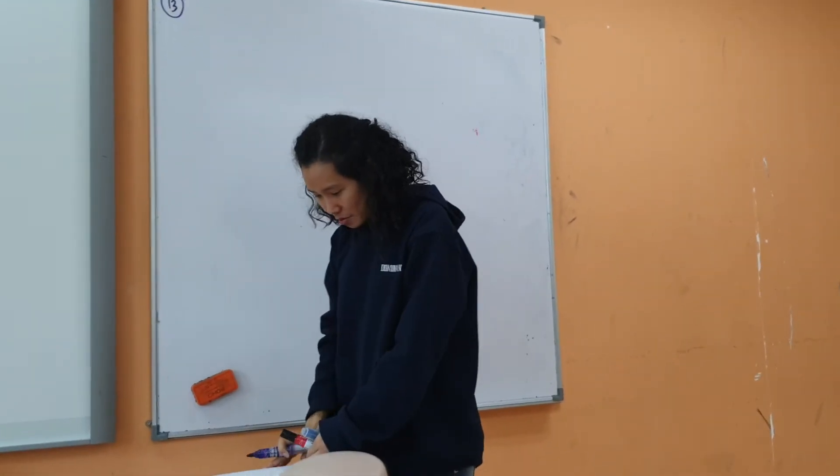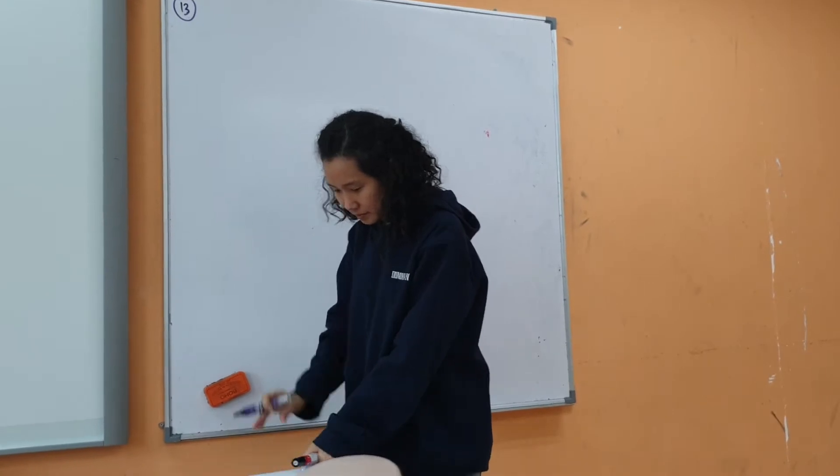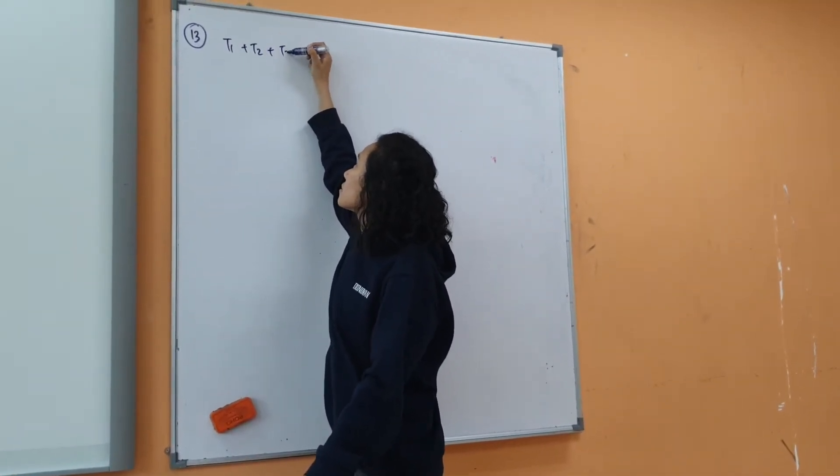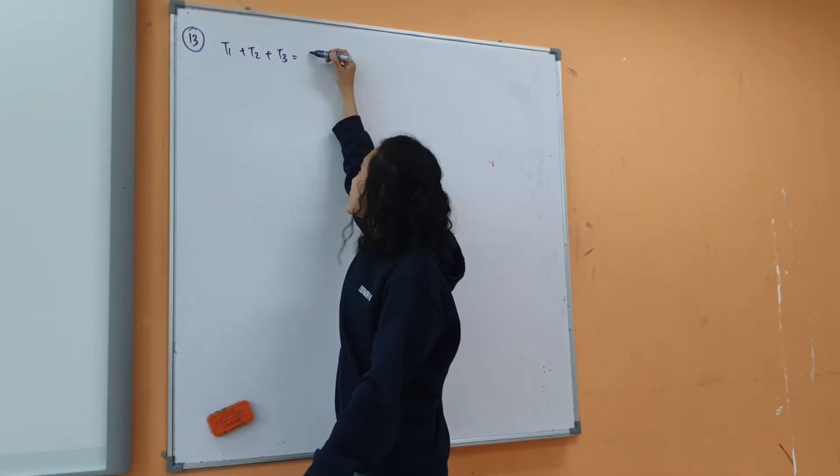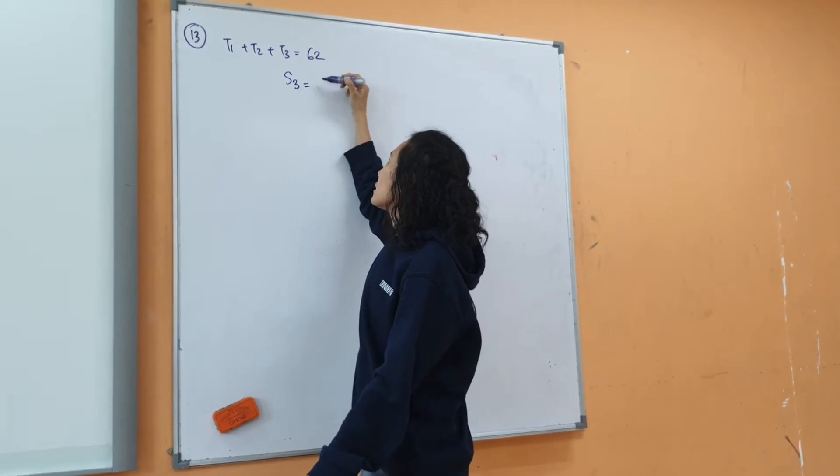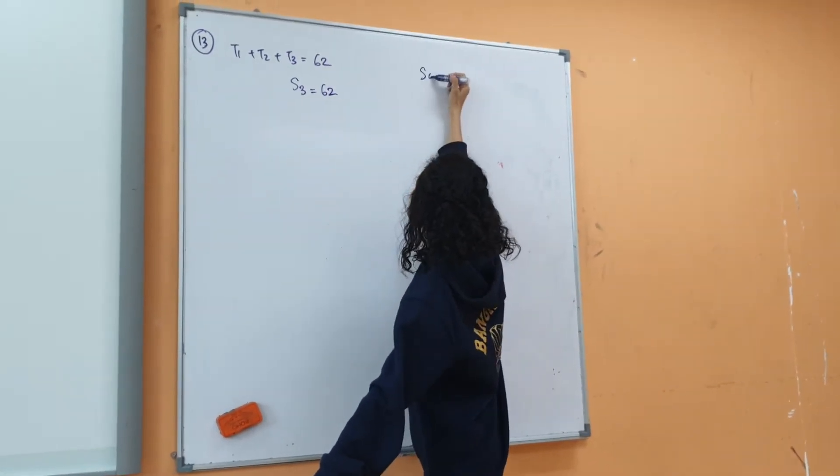Tiong's term. What is given Tiong? Sum of 3 terms is 62. So T1 plus T2 plus T3 is 62. I can write it like this or I can write it like S3. And then what else? Sum of infinity is 62.5.